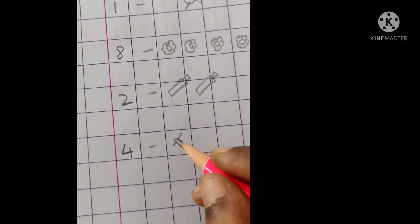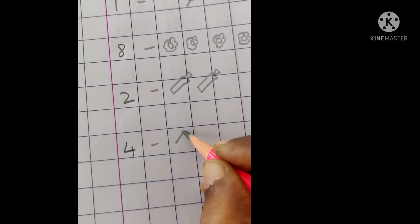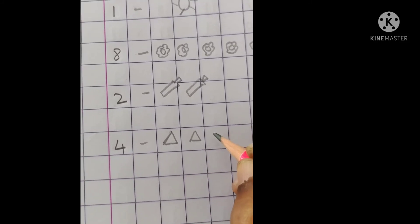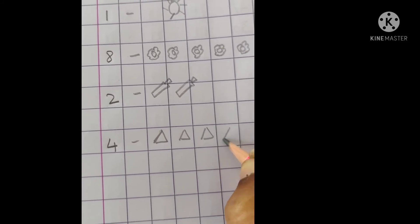Next is number 4. 4 triangle. Okay, 4 triangle.